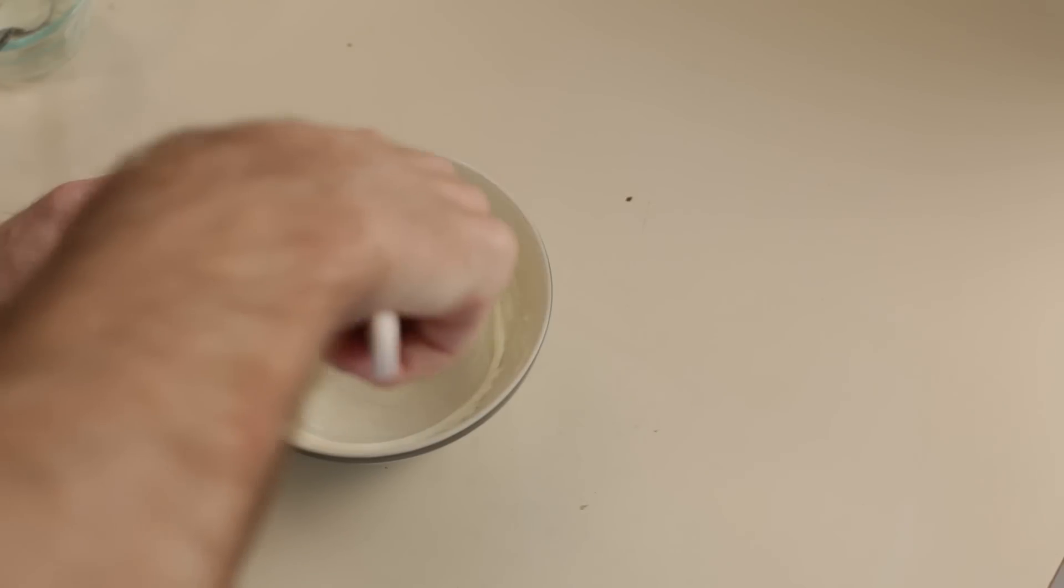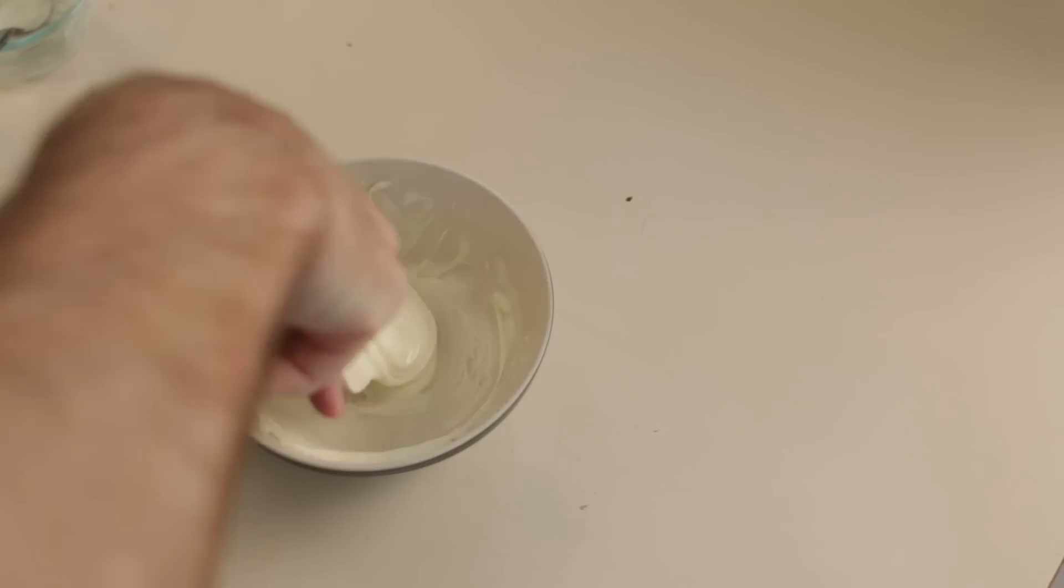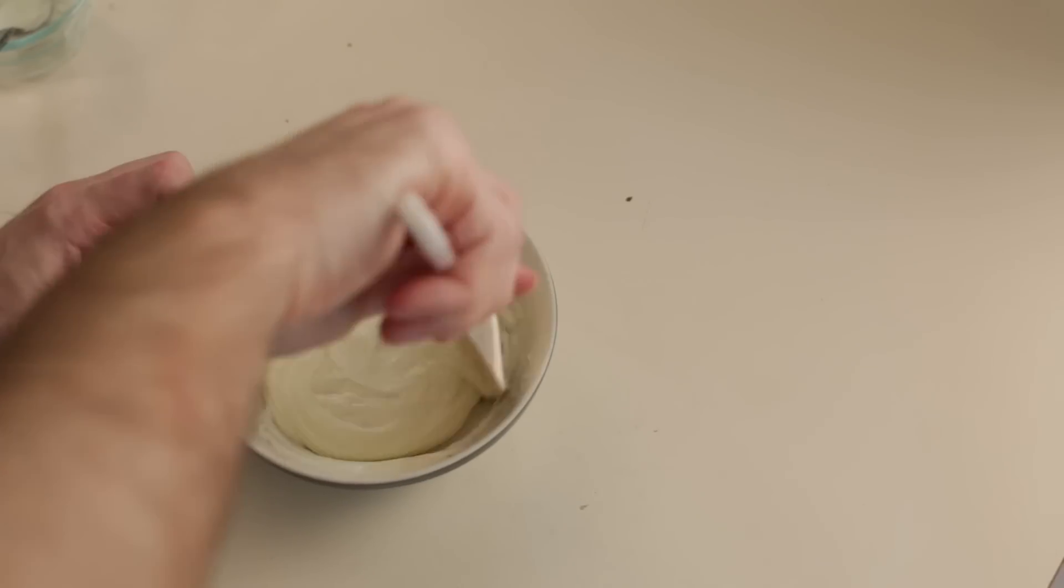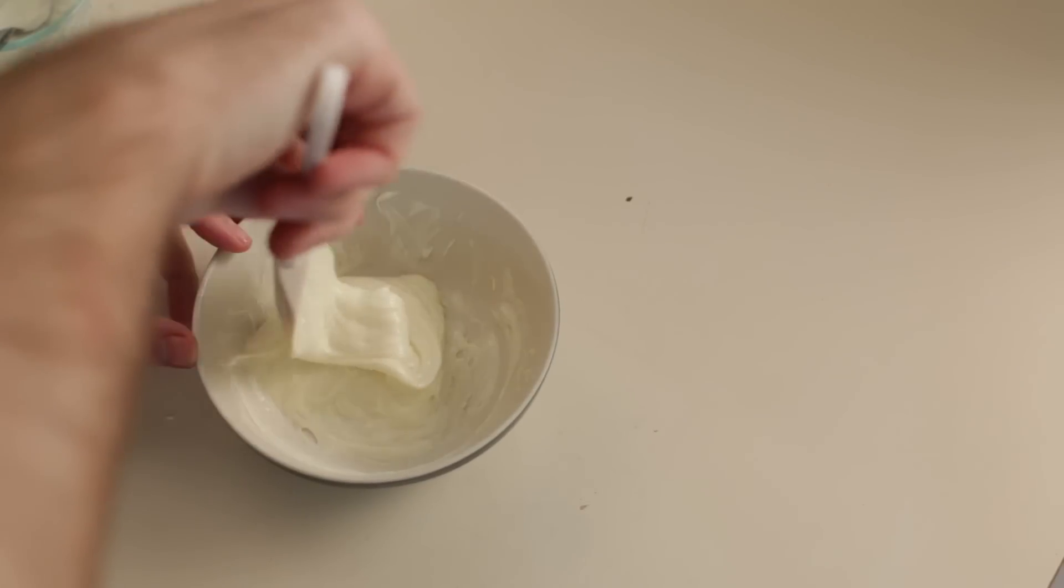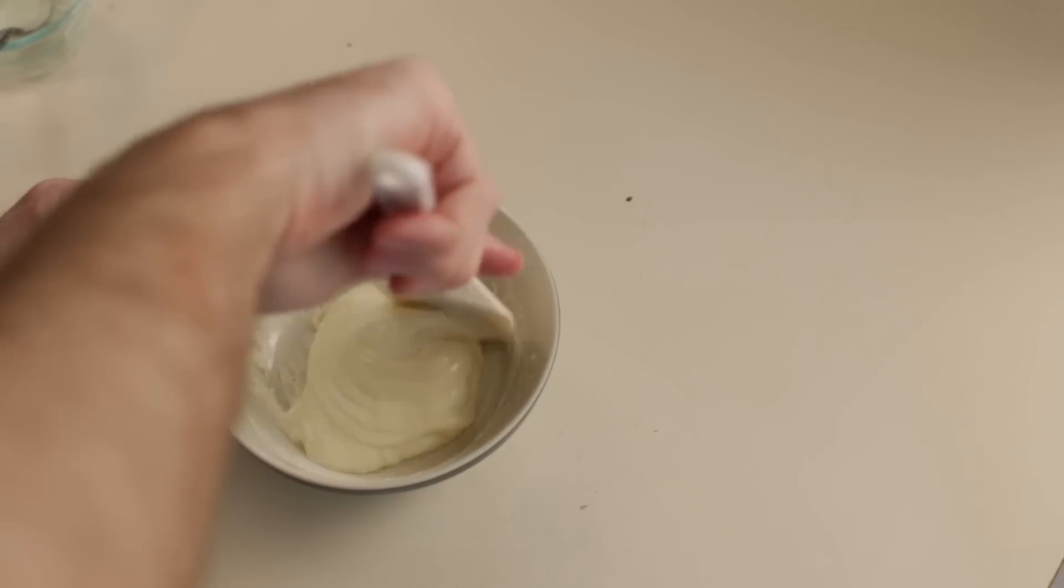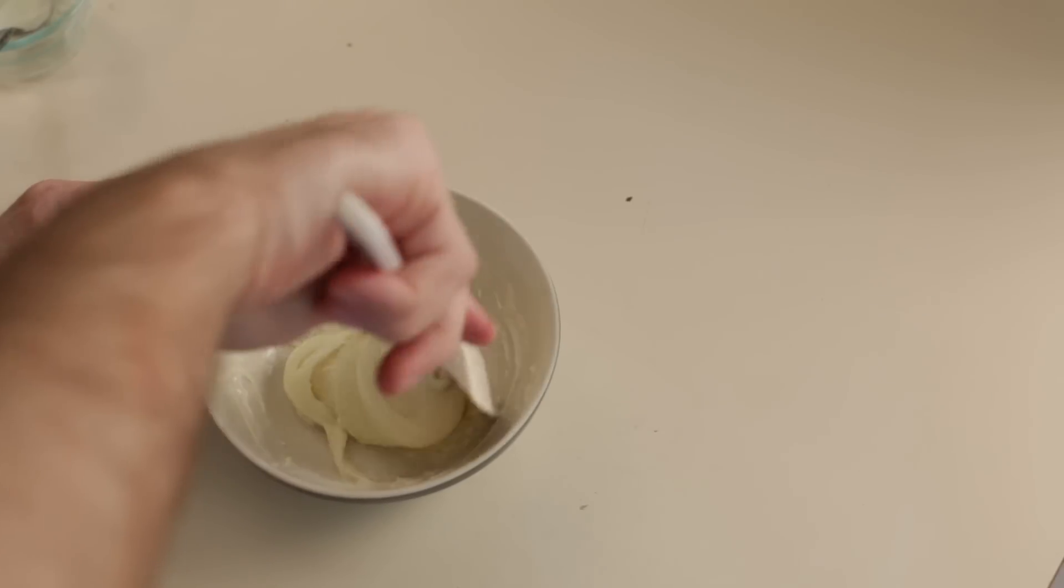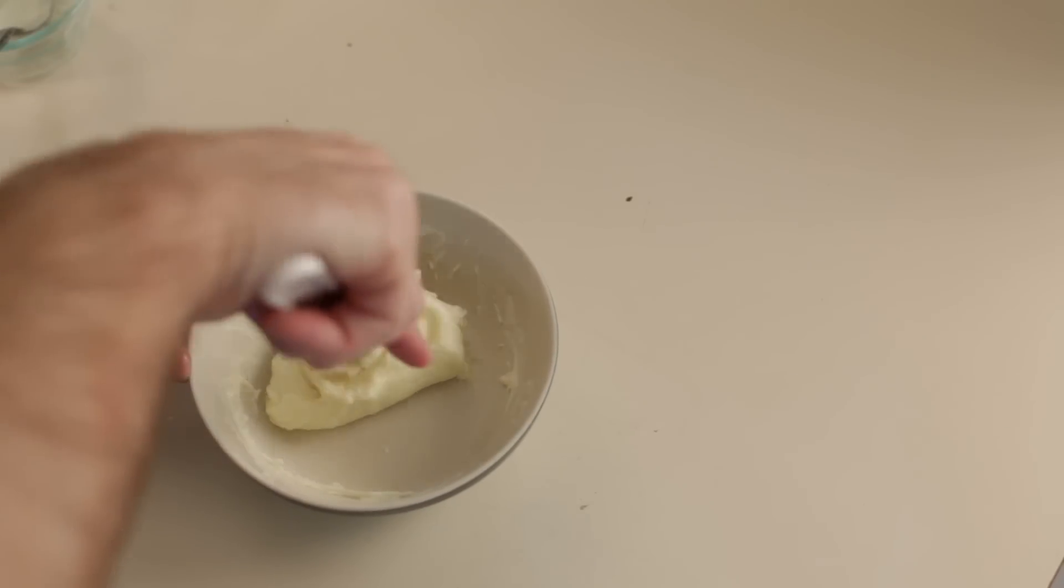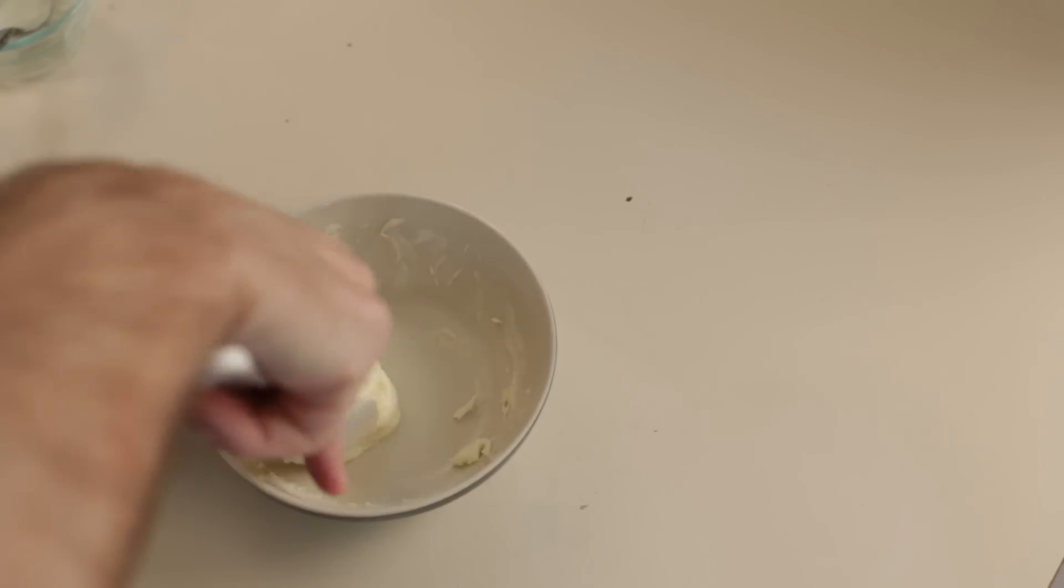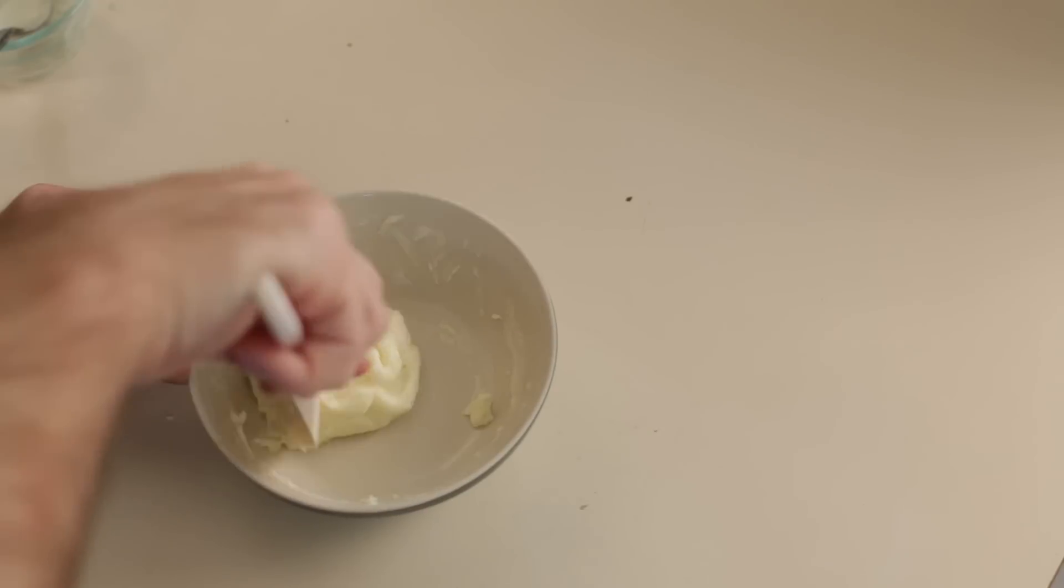And pretty soon it will start to get tacky and pull away from the wall, and that is how you know you are getting close. But you want all the chocolate to mix with the corn syrup. So about like this, it is about ready. See how it pulls away from the wall there, it is starting to look like dough.